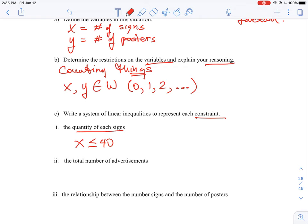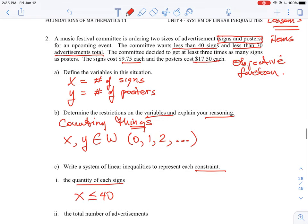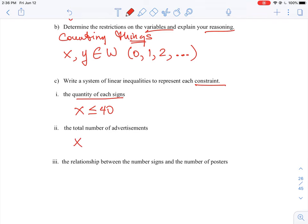The total number of advertisements - that is the signs plus the posters. And what are we told here? Less than 70 advertisements total. So in the question, the signs plus posters can't be greater than 70. So that means we would take both the number of signs plus the number of posters, and we define that as being less than 70. So that's 69, 70, 68, cannot be 71. The limit here is less than or equal to 70.